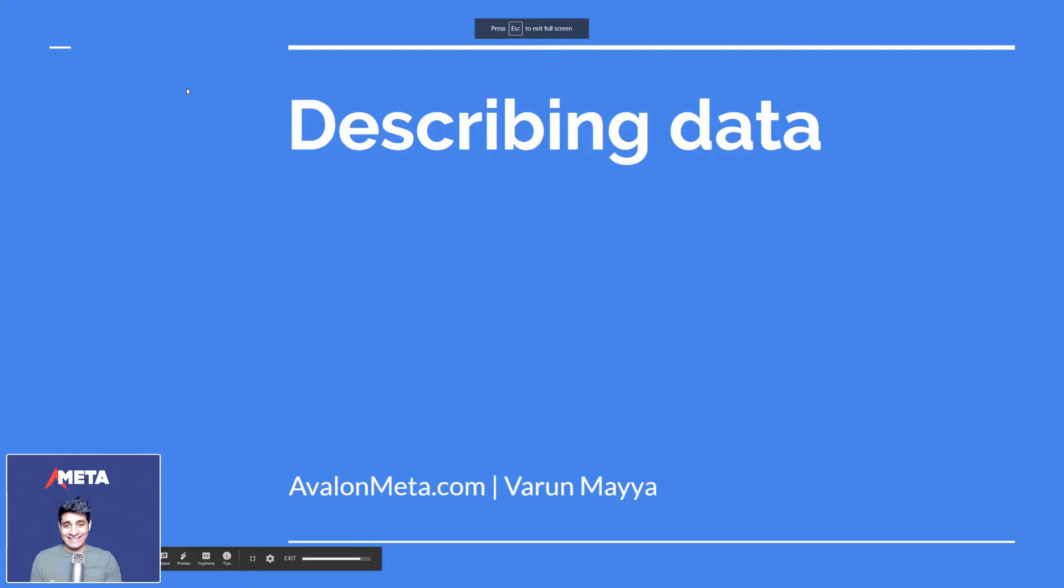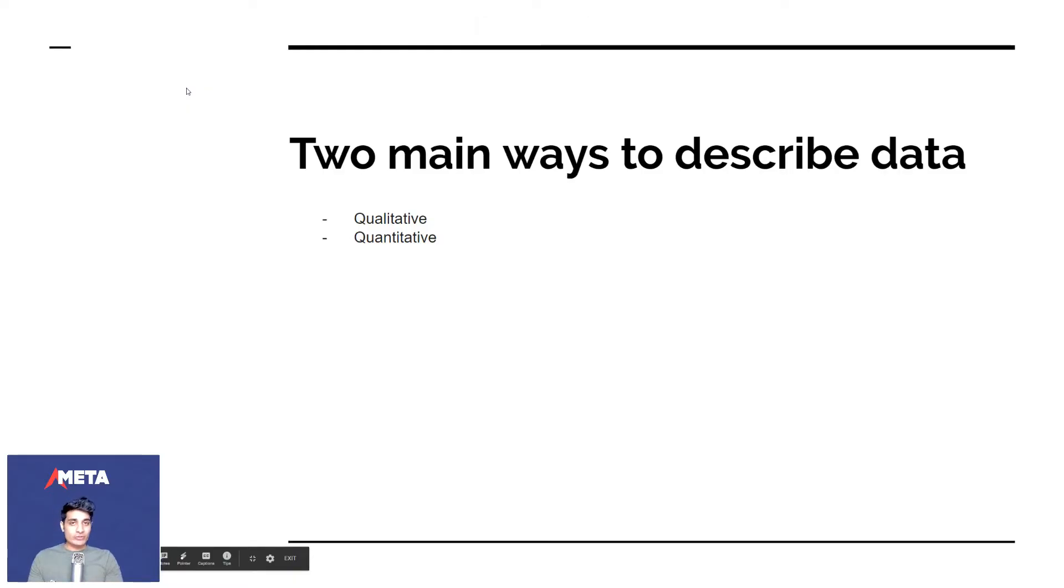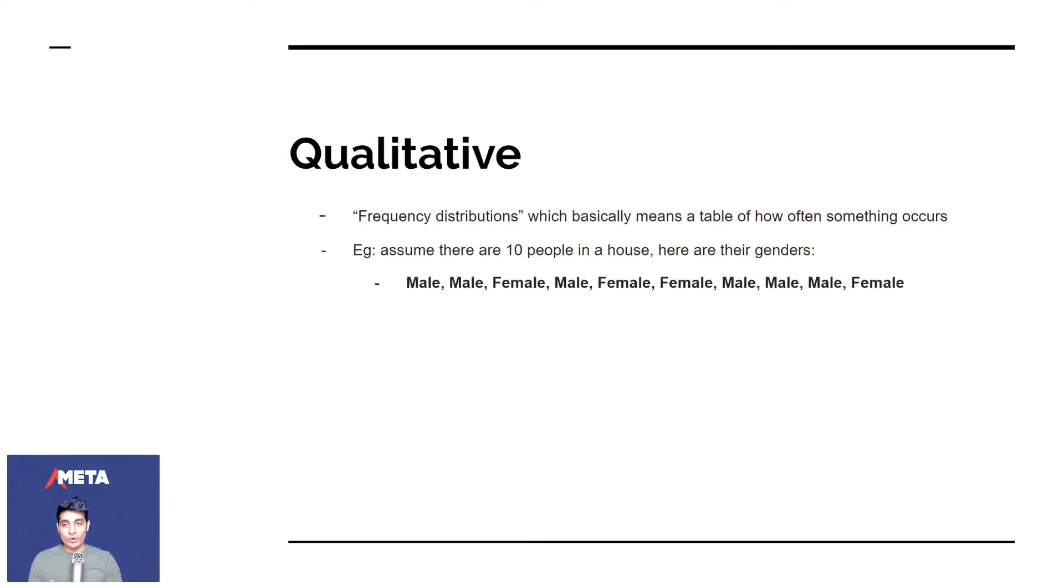Our episode today is called Describing Data. So there are two main ways to describe data. And some of you have already studied a little bit of this, but we'll recap it. The first one is qualitative, and the next one is quantitative. So in qualitative description, these are called frequency distributions.